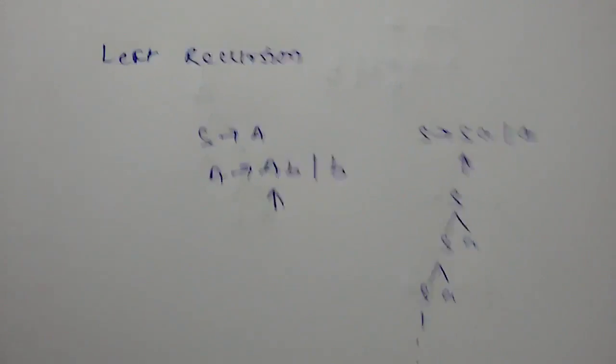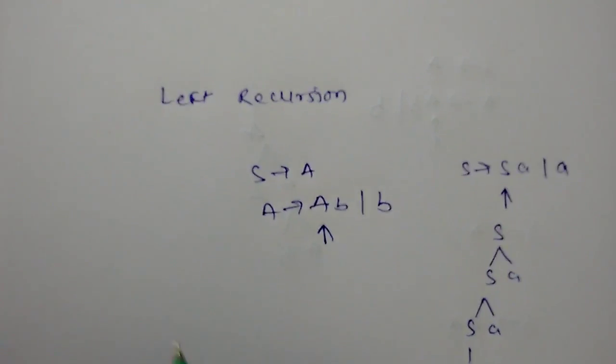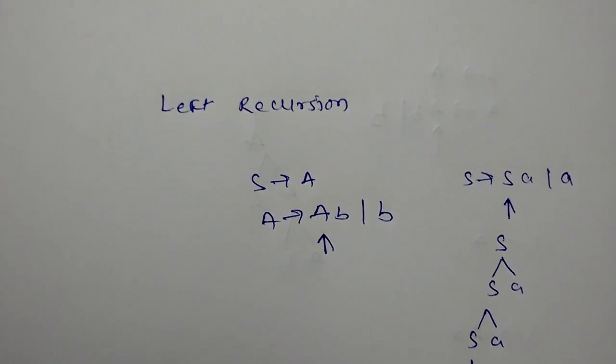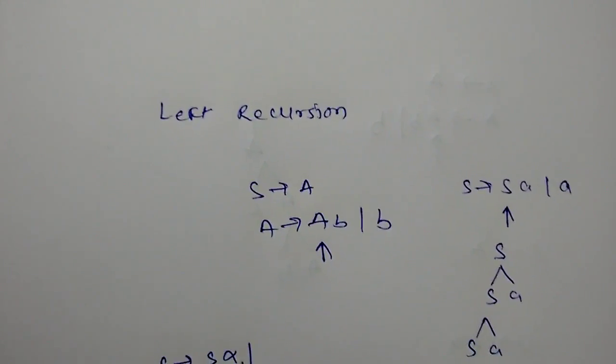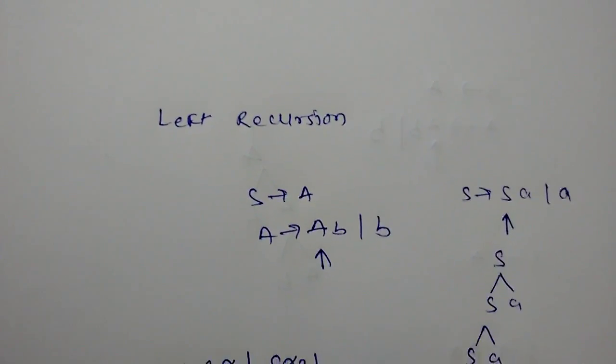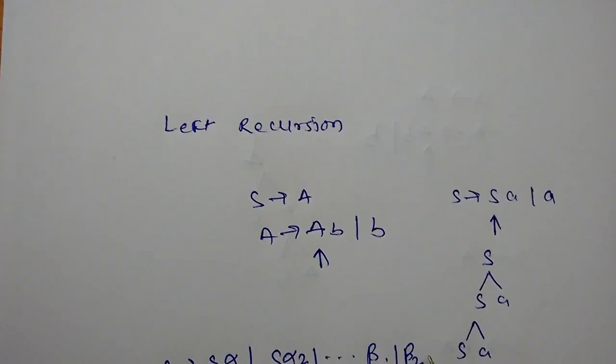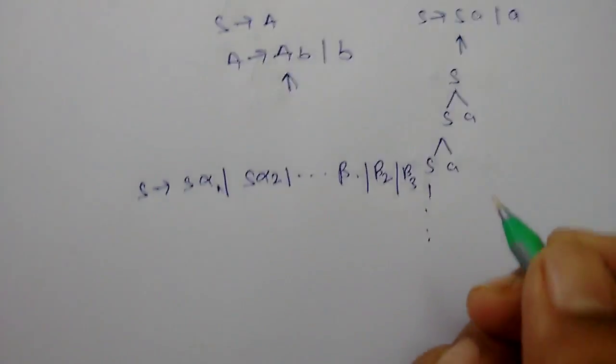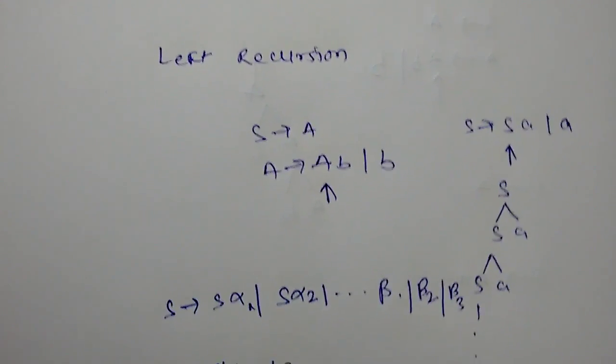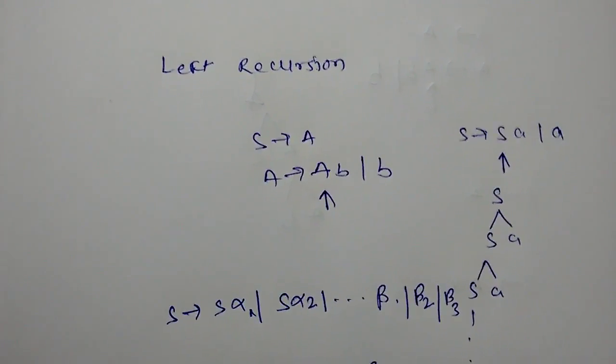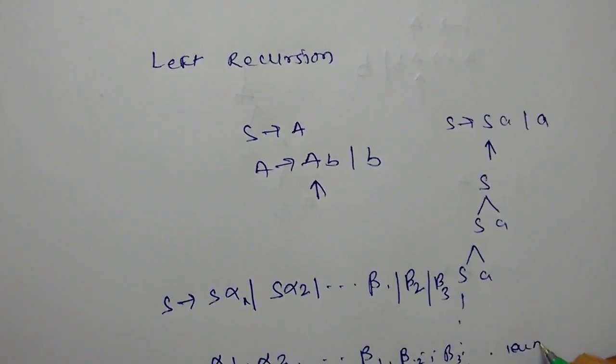There is a procedure for how we can remove the left recursion. Suppose there is a set of productions like S goes to S alpha1, S alpha2, beta1, beta2, beta3, where alpha1, alpha2, beta1, beta2 are terminals.